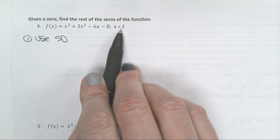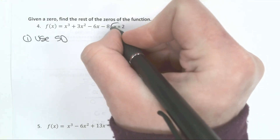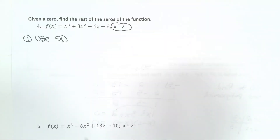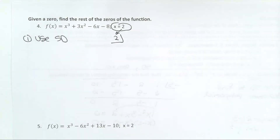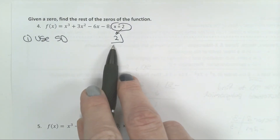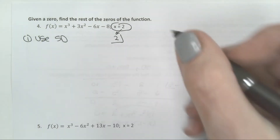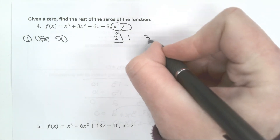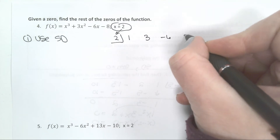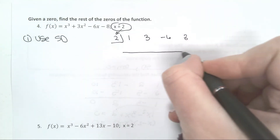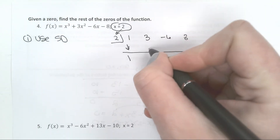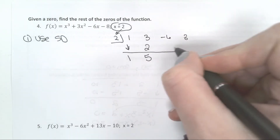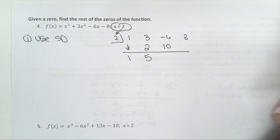So x equals 2. When it gives it to you like this, the only difference is that this is the number that goes in your box — you don't have to change the sign. Write down your coefficients, and we're going to run synthetic division. Bring down your first number, multiply, add, multiply, add.